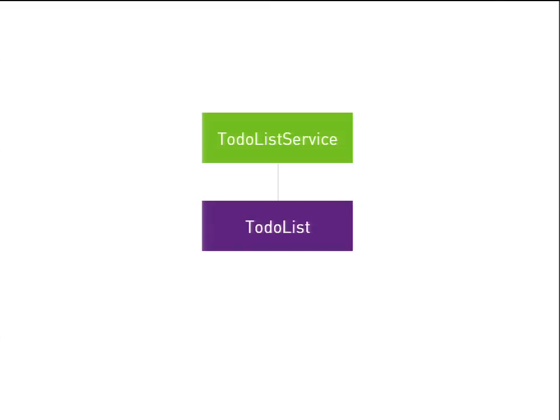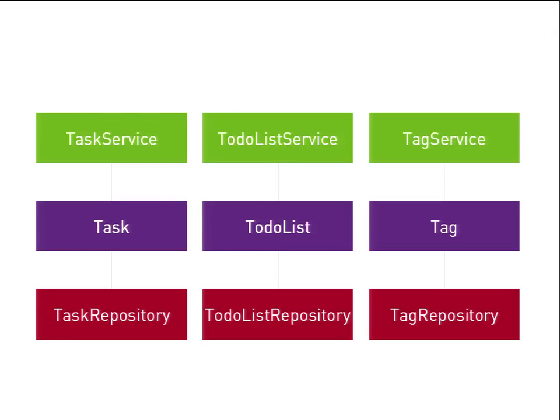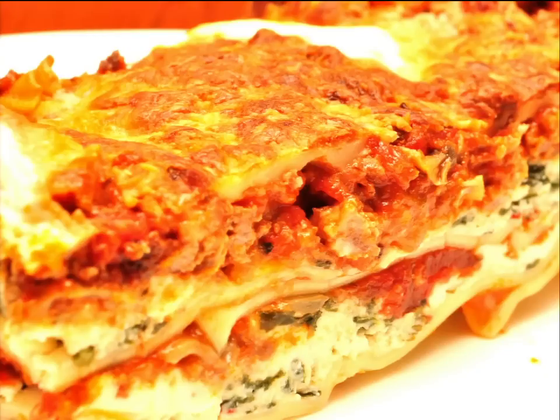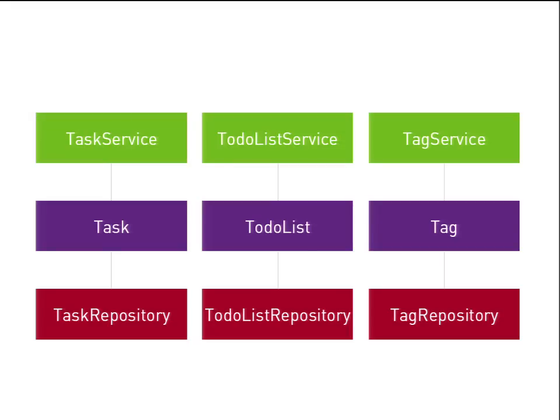We're only focusing on one object — the to-do list — and it's already got a service and a repository. As we add tasks, tags, and more objects, you just melt some cheese on top and you've got a big steaming pile of lasagna code. If you've never worked with lasagna code, it is the worst type of code. It's the opposite of spaghetti code: you have so many layers stacked on top of each other that if you want to modify anything, you have to cut through all of them at the same time. I once worked on an application where adding a new field from the database all the way up to the UI meant modifying code in seven different places. It was the worst.